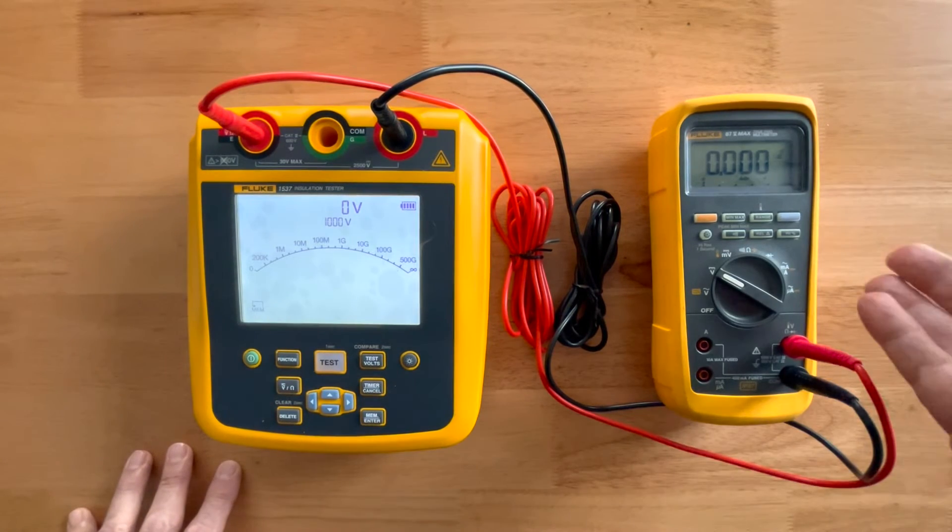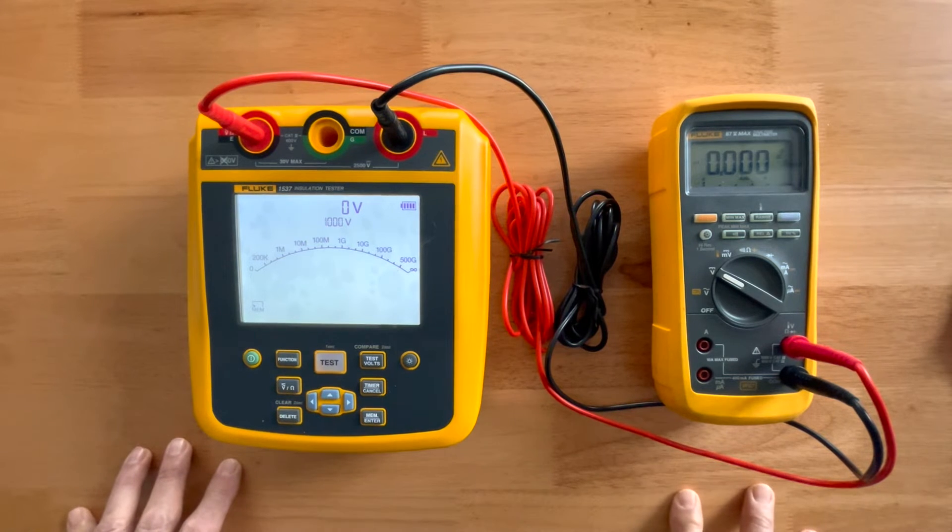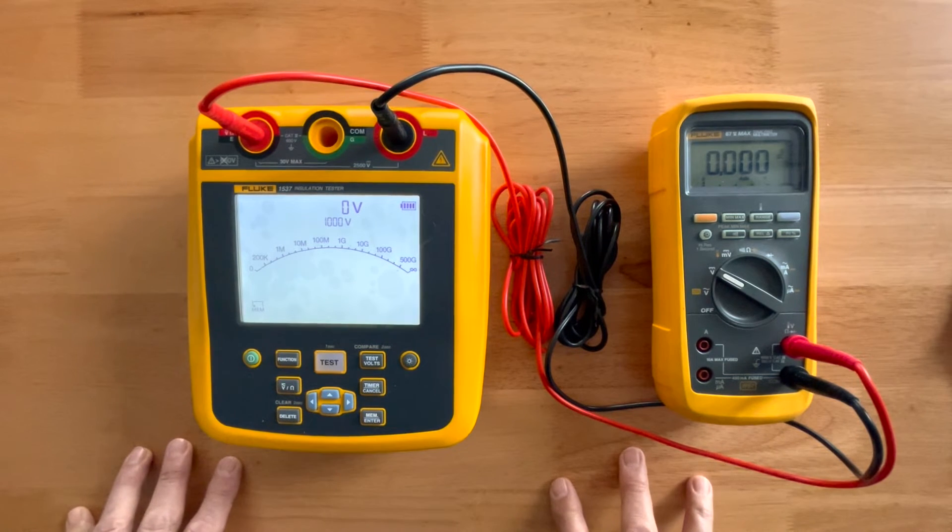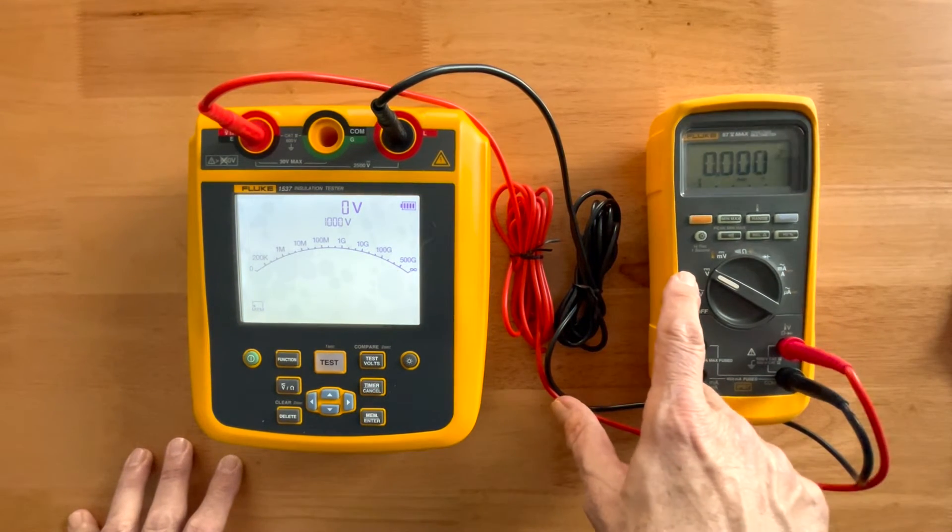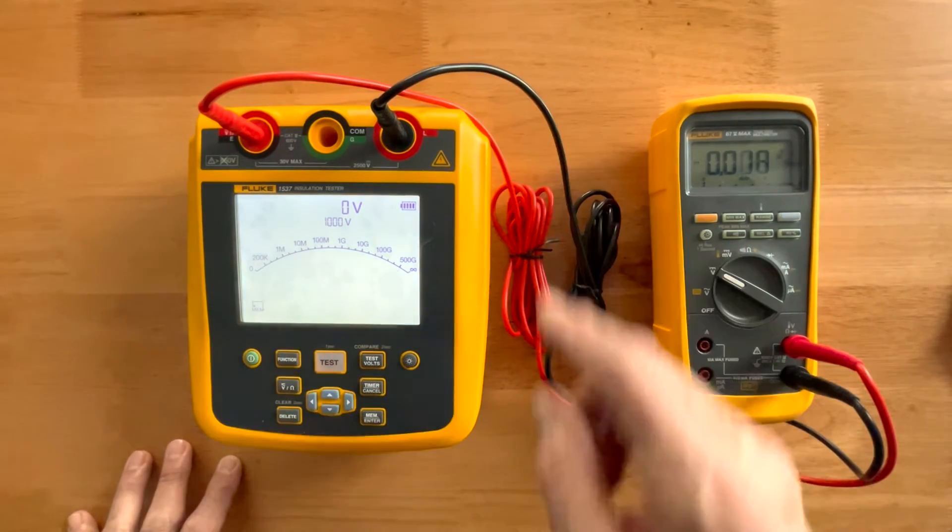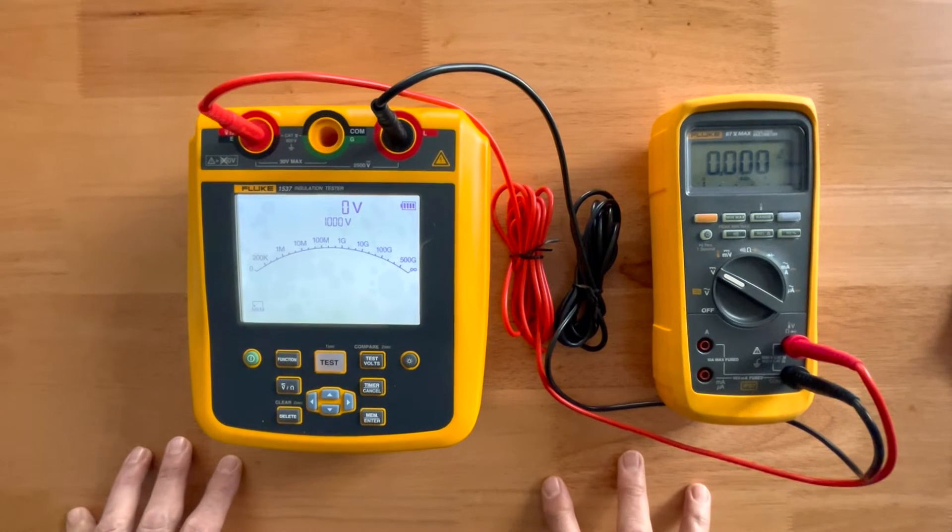And off to the right here, you may or may not recognize this device, probably the most popular meter we sell in the entire world, called an 87.5. And I have this flipped to volts DC, with it connected to the output side of this insulation tester. And I'm going to start the test.